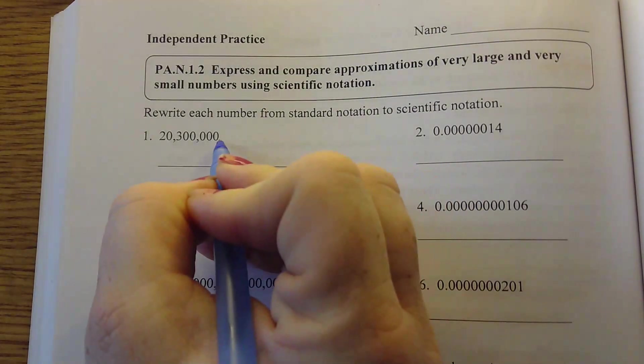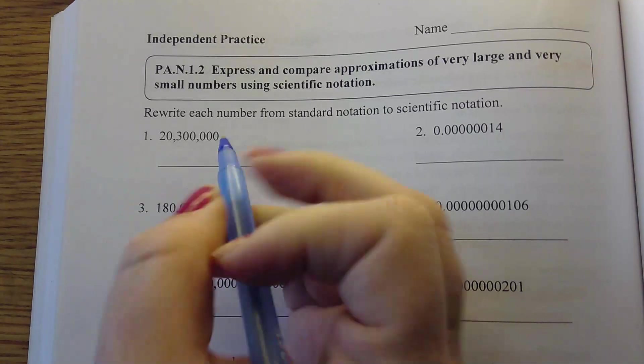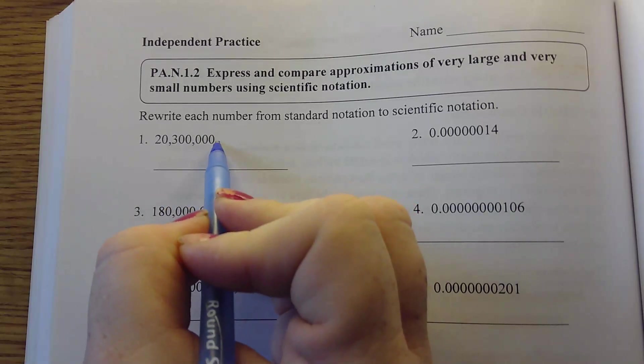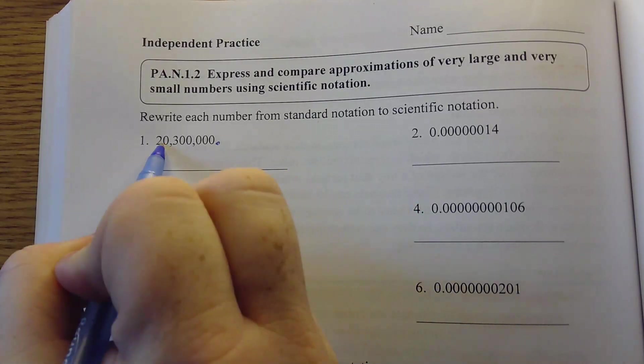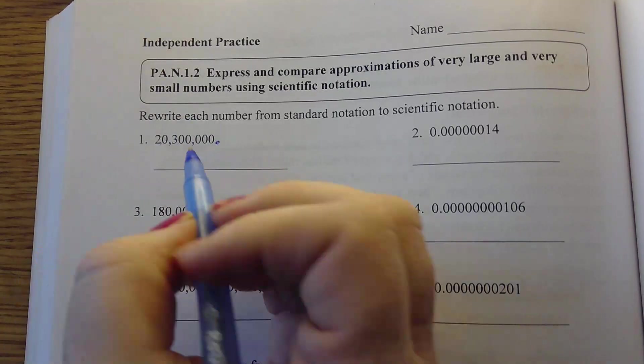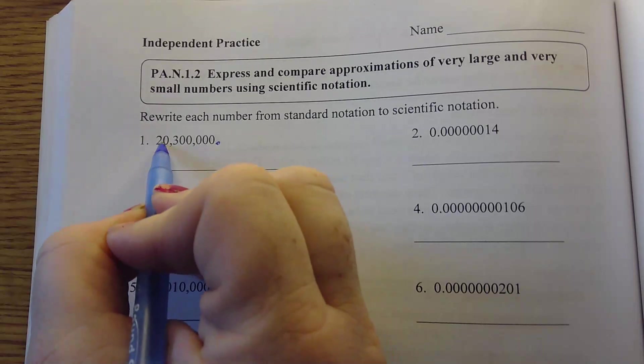So if there's no decimal, our decimal is here. Remember when we're looking at scientific notation, we're actually going to have one space in the ones place, but nothing in the tens. So we've got to get this decimal from here to here.